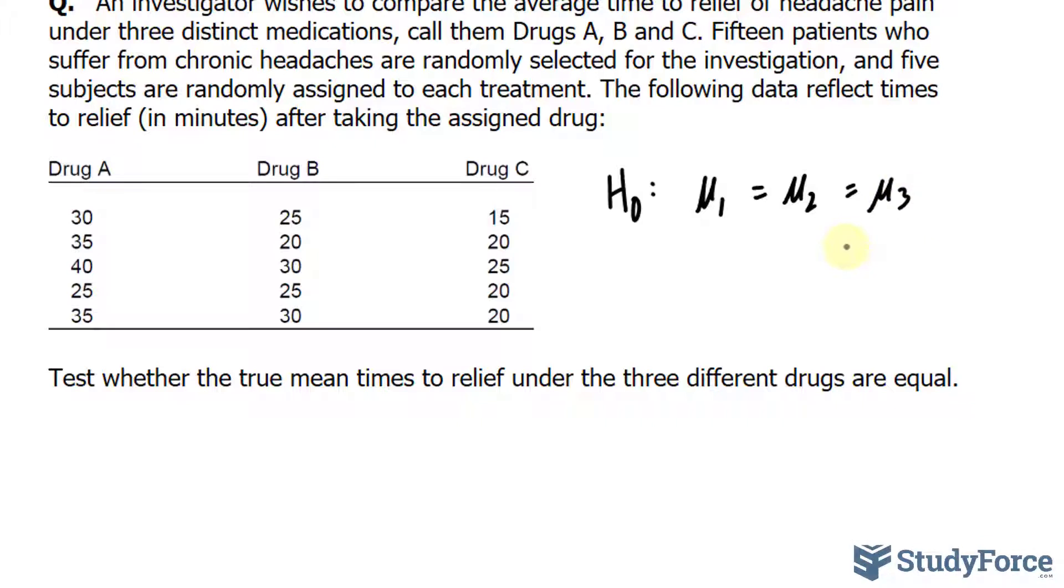The alternative hypothesis is the opposite, where we write down H A, and at least one of these differ.